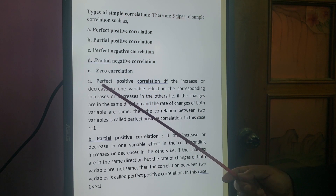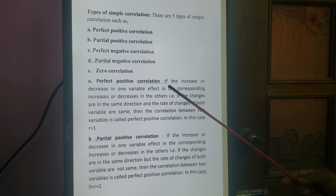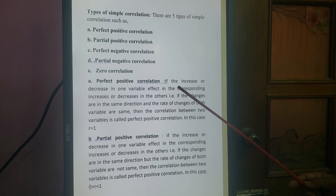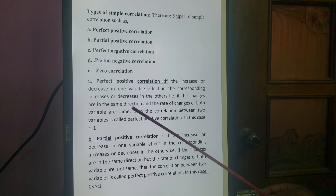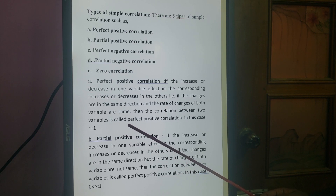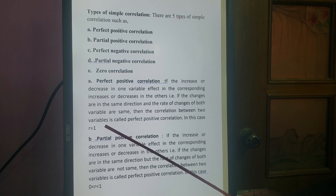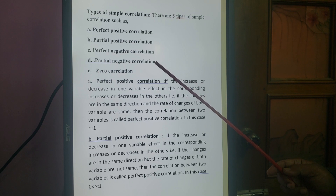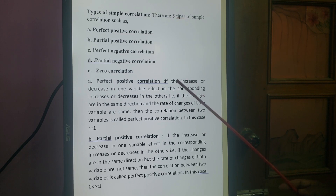Perfect positive correlation: if the increase or decrease in one variable effects a corresponding increase or decrease in the other — that is, if the changes are in the same direction and the rate of change of both variables are the same — then the correlation between two variables is called perfect positive correlation. In this case, R is equal to 1.